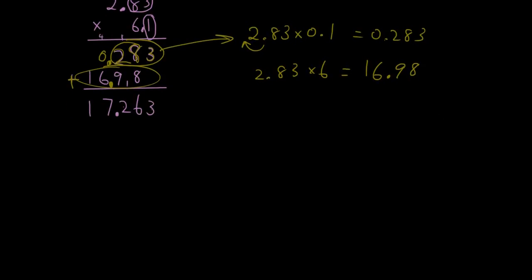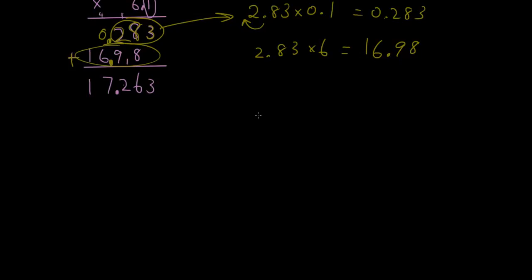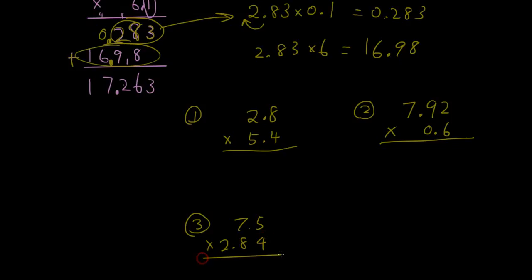Just to confirm that you guys can do it, I'm going to give you one question, you're going to try it out. So let's do 2.8 times 5.4. Let's do that one. And then let's give you a harder one, 7.92 times 0.6. Okay, might as well just give you another one, 7.5 times 2.84. Try these out and come back when you're done.